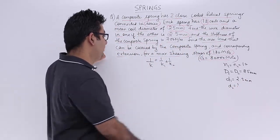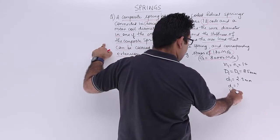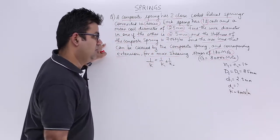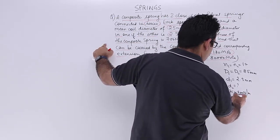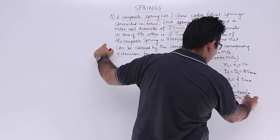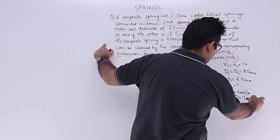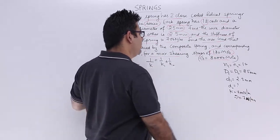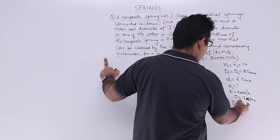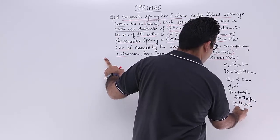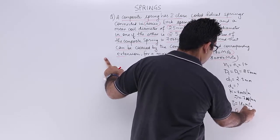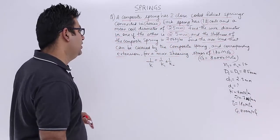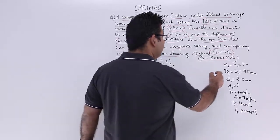The composite spring stiffness in mm would be 0.7 Newton per mm. And the maximum shearing stress is 180 MPa and shear modulus is 80,000 MPa. So we know that we are given these values.